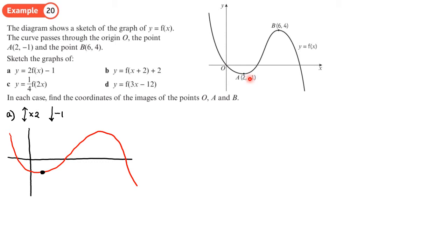I'm now going to put the coordinates on, remembering to double the y coordinates and take one away. So here, negative one doubled is negative two, take one away gives negative three. This y coordinate gets doubled — that was zero, take away one, so it's zero, negative one. This peak up here: double it gives eight, take away one gives seven. And that's it for part b.